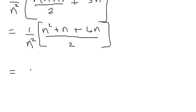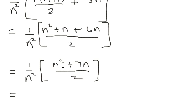And therefore now we have n squared plus 7n over 2. We can factor out an n.